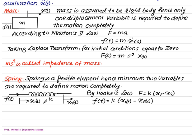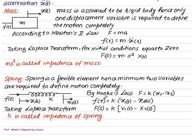The net displacement is x1 minus x2, so f(t) = k × (x1(t) − x2(t)). Taking the Laplace transform, F(s) = k × (X1(s) − X2(s)). The term k is called the impedance of the spring.